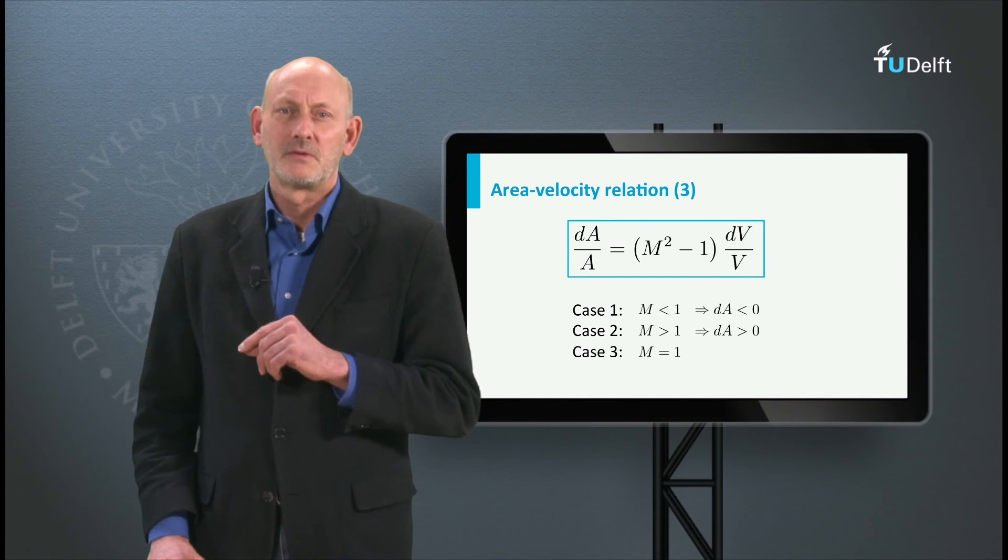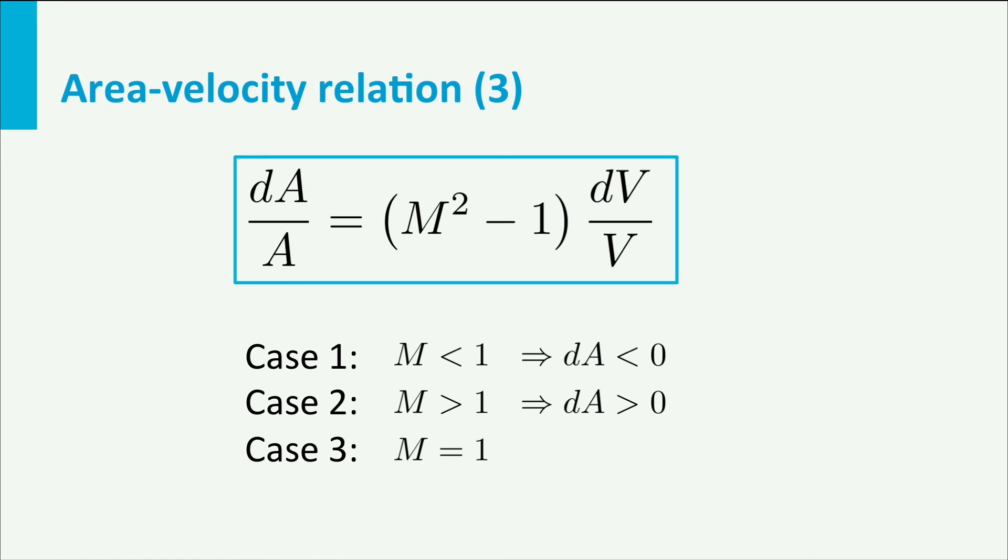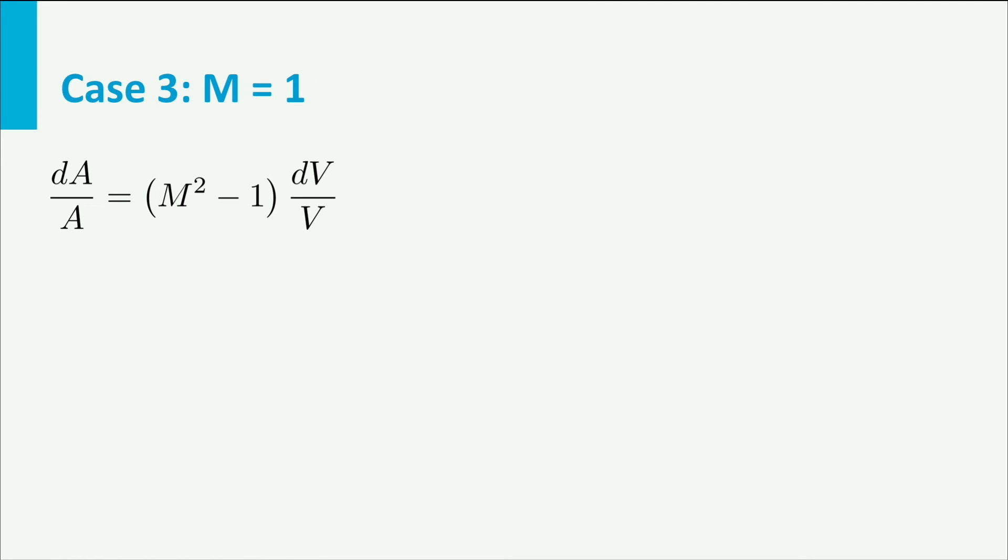And finally a difficult one. Suppose the flow is sonic, so M is 1. Let us rewrite the equation dV over V equals 1 divided by M squared minus 1 times dA over A. Now if M is 1, we have dV over V equals 1 divided by 0 times dA over A. At first glance this would mean dV over V is infinite. But this cannot be true on a physical basis, since the change in velocity cannot be infinitely high, and secondly the velocity is not zero but sonic.